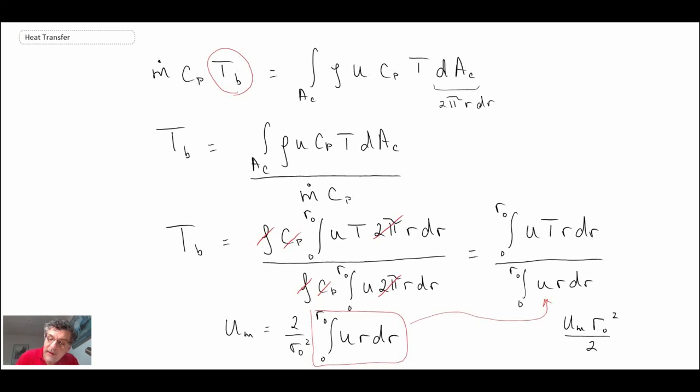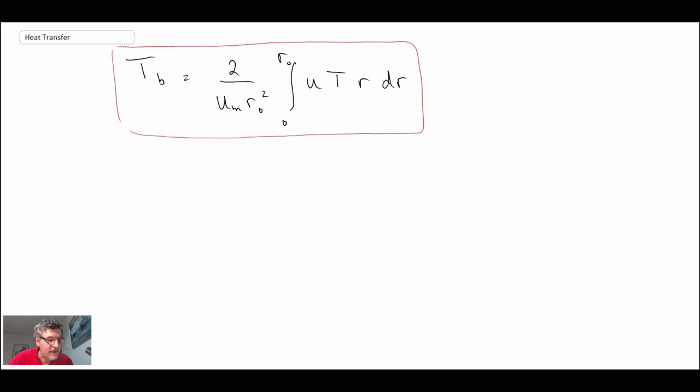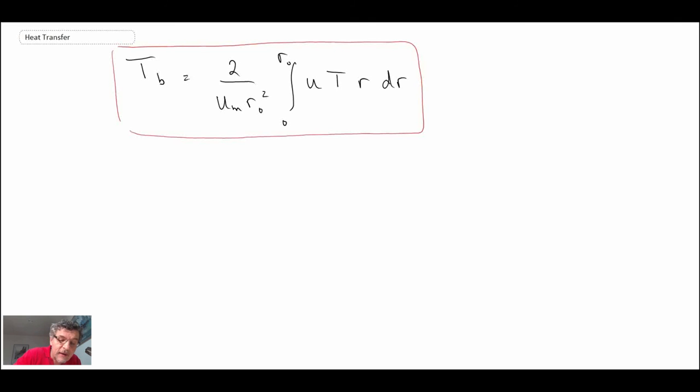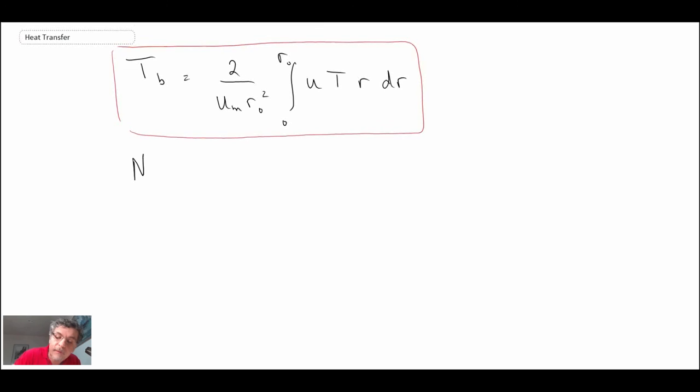Making that substitution, we can then rewrite our bulk temperature in the following manner. This becomes an expression for the bulk temperature, sometimes also called the mixing cup temperature. Essentially, this is a temperature that we can then use once we've evaluated it in Newton's law of cooling. Recall at the beginning we said that we did not have a free stream temperature—well, this is kind of the equivalent of a free stream temperature.